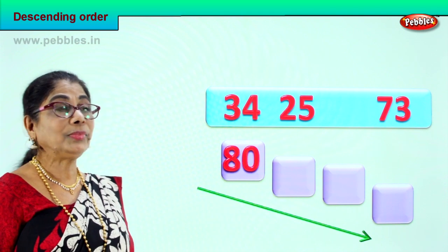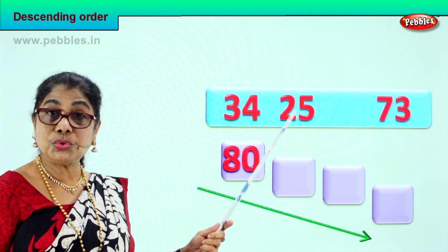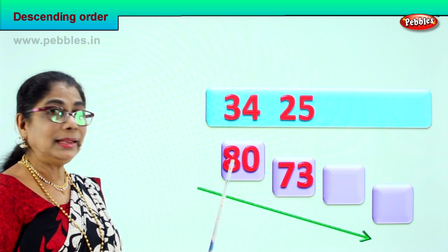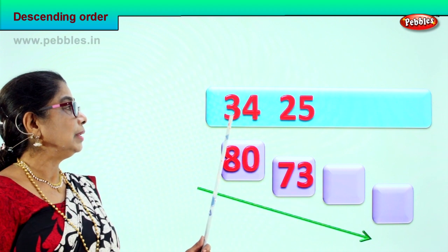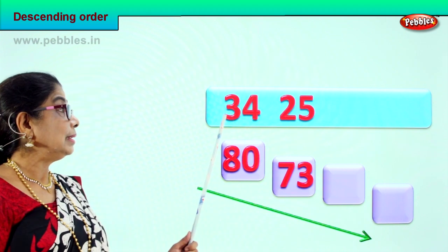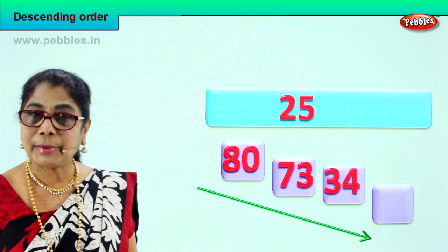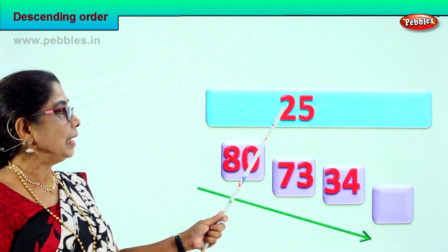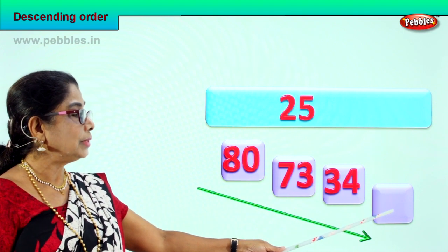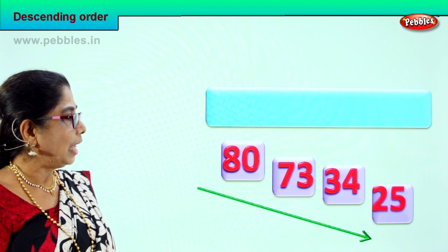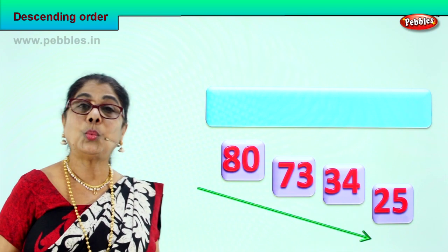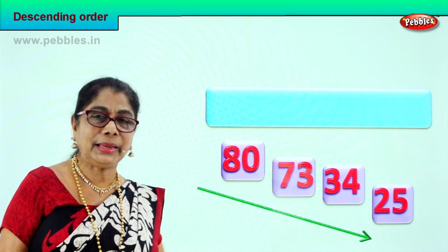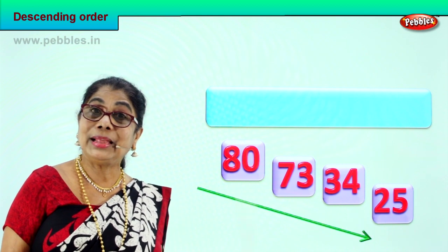The biggest number has to be on top. Now we check: three tens, two tens, seven tens. The next big number is seven tens — seventy-three, three ones. Next we have three tens and two tens — certainly three tens, thirty-four, four ones will be the next one. And the smallest among all four is two tens — twenty-five, five ones — that goes right down here. We have arranged all four numbers in descending order: eight tens, seven tens, three tens, two tens — starting with the biggest to the smallest.